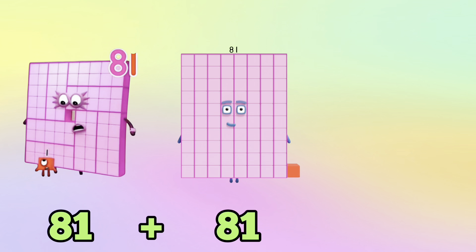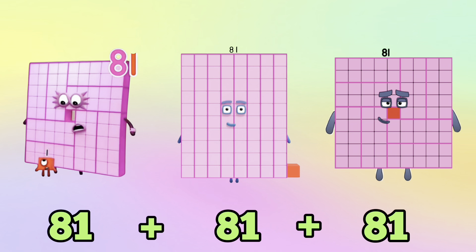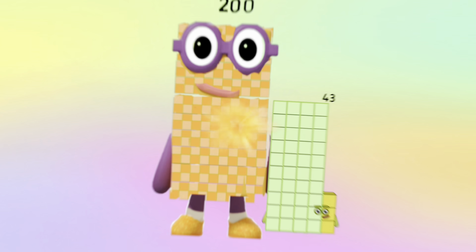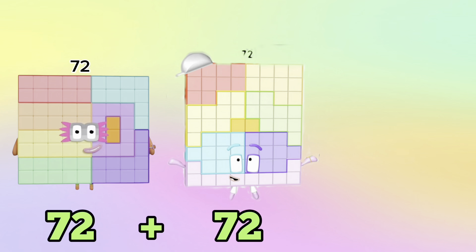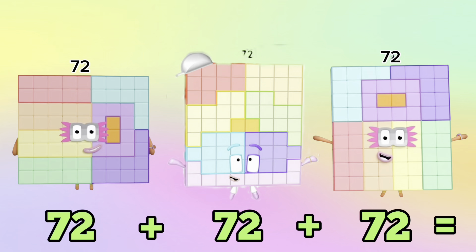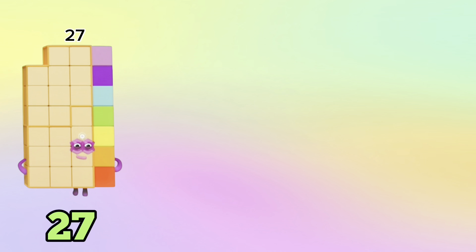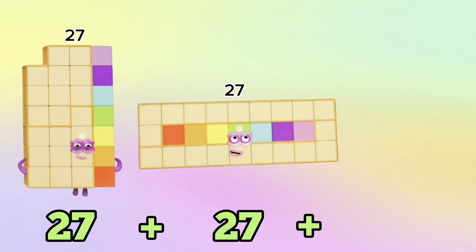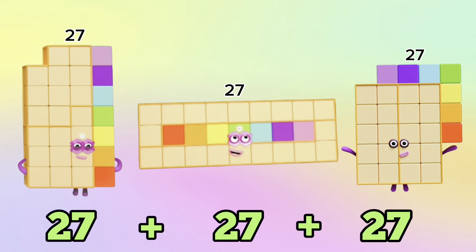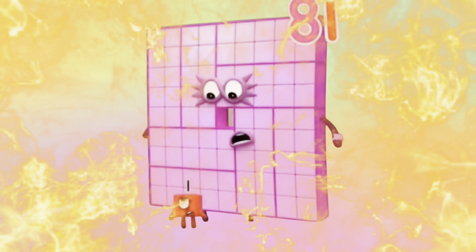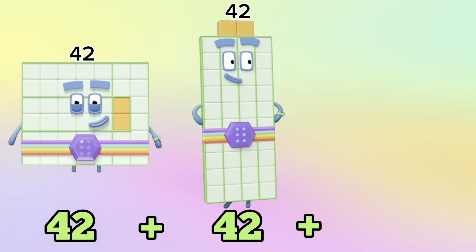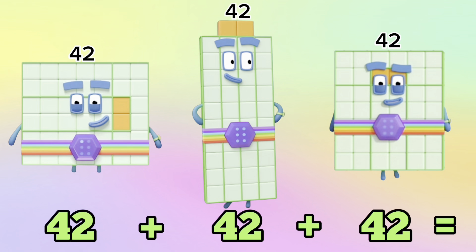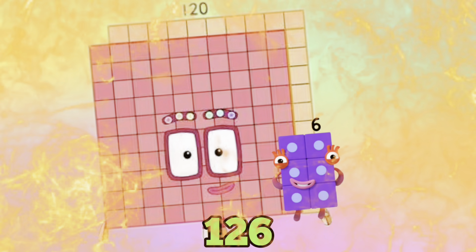81 plus 81 plus 81 is equals to 243. 72 plus 72 plus 72 is equals to 216. 27 plus 27 plus 27 is equals to 81. 42 plus 42 plus 42 is equals to 126.